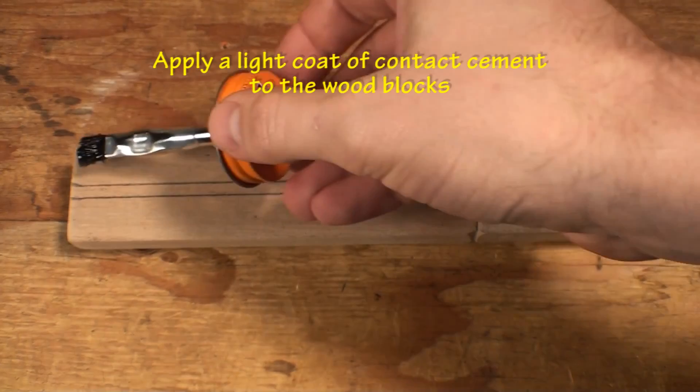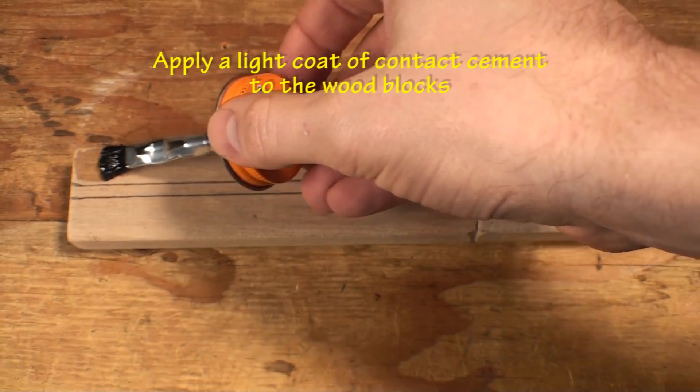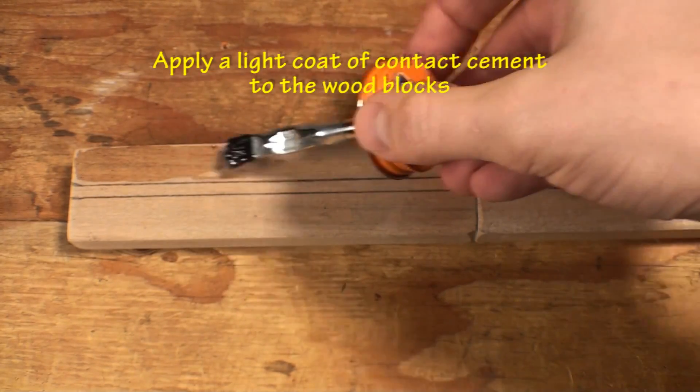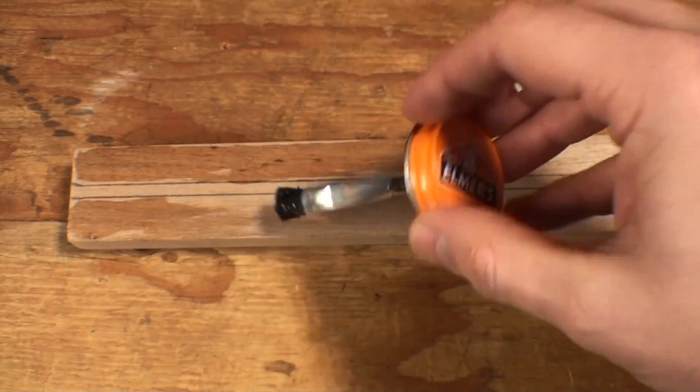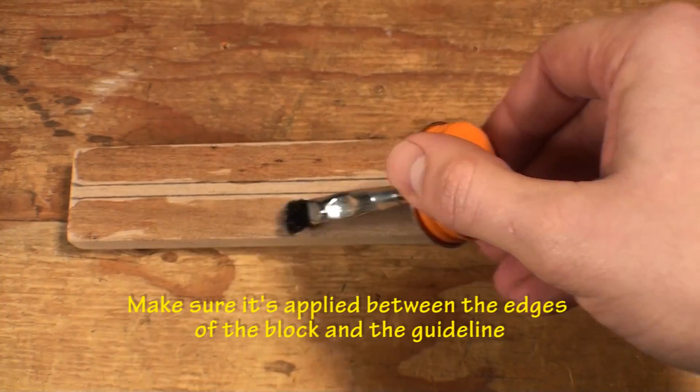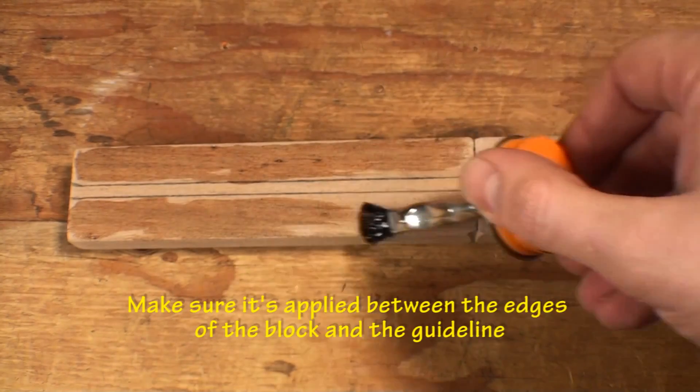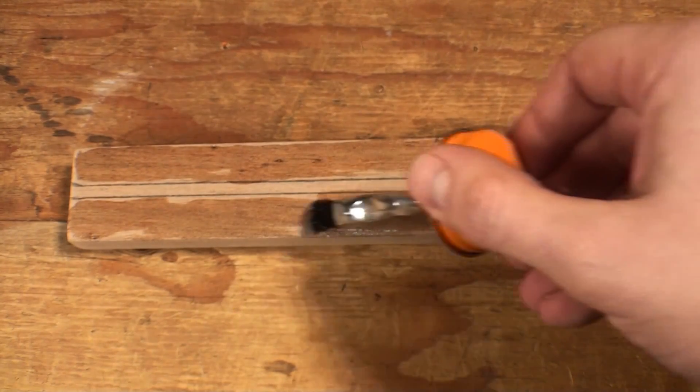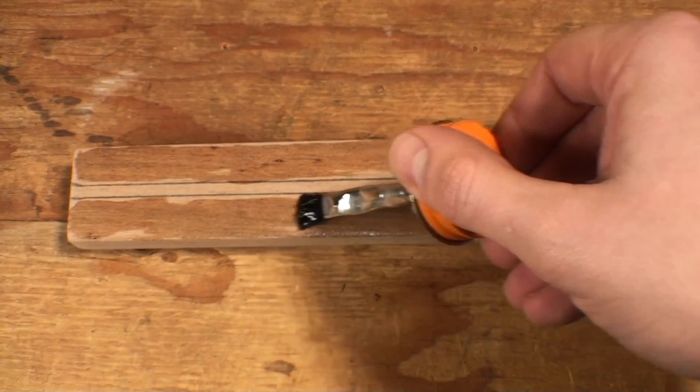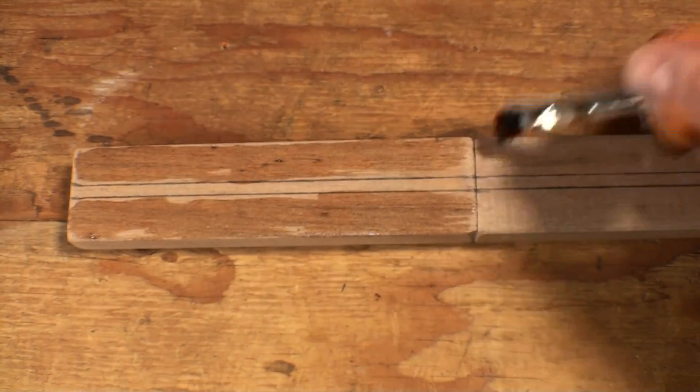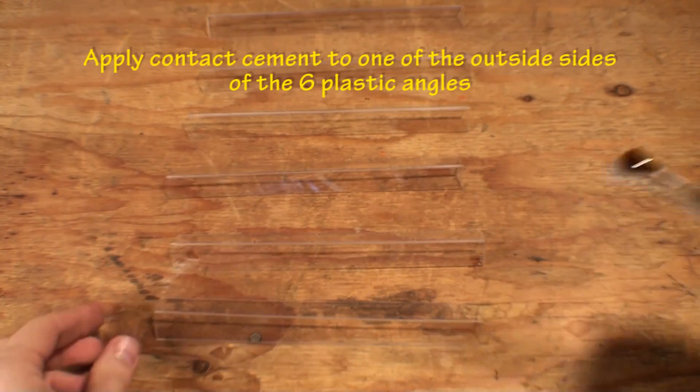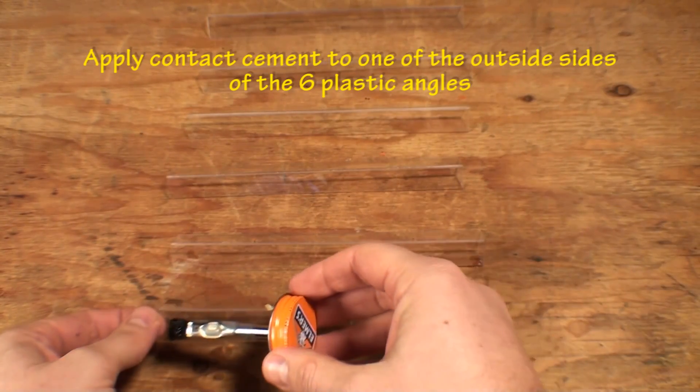Apply a light coat of contact cement to the wood blocks. Make sure to apply it only to the five-eighths inch space between the edge of the block and the guideline. Set aside and allow the cement to dry for ten minutes. While that's drying, apply a light coat of